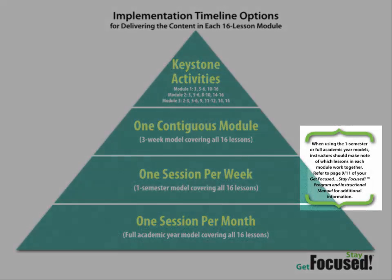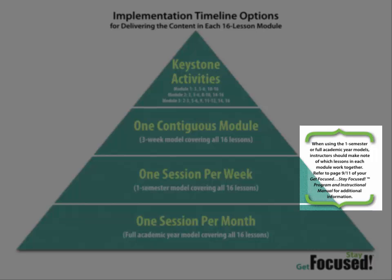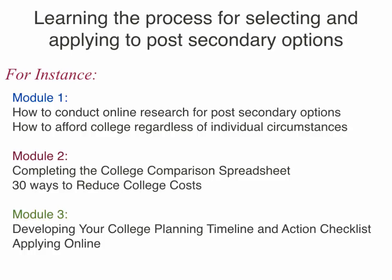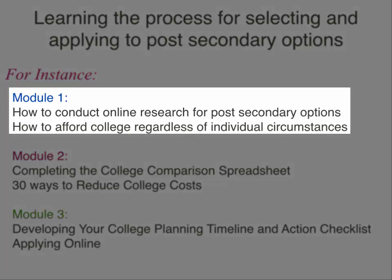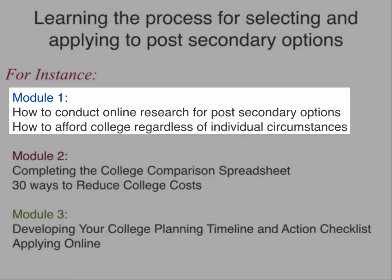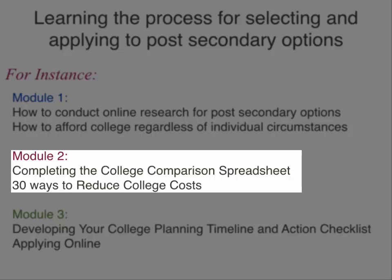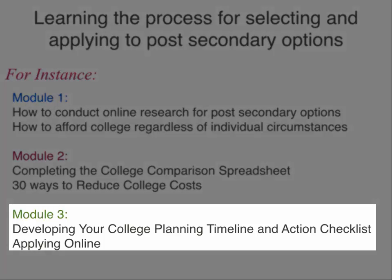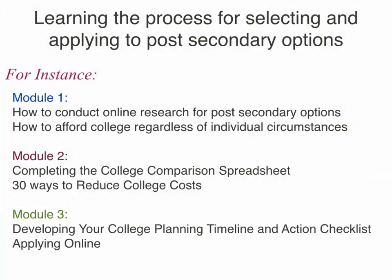There are notes here referring to pages 9 through 11 of the program and instructional manual, which give you an idea about which lessons pair up nicely together. When thinking about how to infuse the curriculum in your high schools, students are going to revisit these topics in all three modules. Some teachers get concerned that they don't have enough time for each lesson, but just like the freshman course, the curriculum will continue to spiral back to the key concepts. For example, in Module 1 students will be doing online research about post-secondary options. In Module 2 they'll compare those post-secondary options and look at strategies for college affordability. In Module 3 they're developing a college-going timeline of all the things they need to do in senior year. So it's really sequential and it builds upon itself with each module.